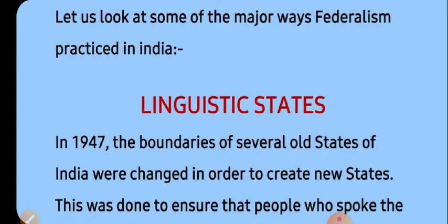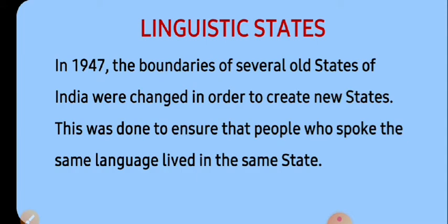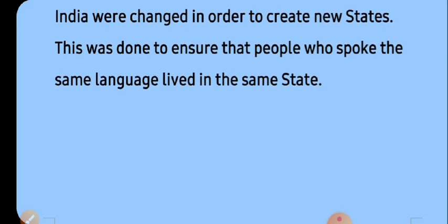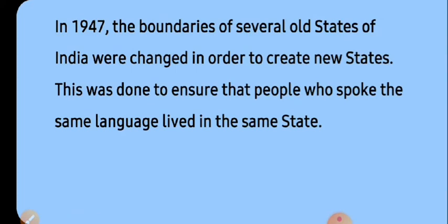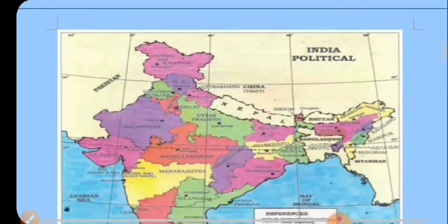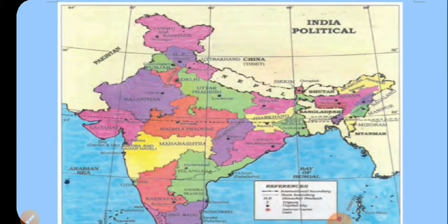Let's look at some of the major ways federalism is practiced in India. The first basis is linguistic states — states formed on the basis of language. In the year 1947, the boundaries of several old states of India were changed to create new states based on language, to ensure that people who spoke the same language lived in the same state. For example, Marathi in Maharashtra, Gujarati in Gujarat, Tamil in Tamil Nadu.